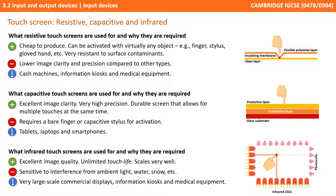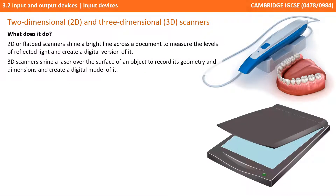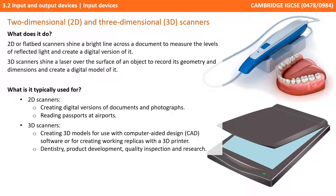Lastly, we have two-dimensional and three-dimensional scanners. A 2D or flatbed scanner shines a bright light across a document to measure levels of reflected light and creates a digital version of it. A 3D scanner shines a laser light over the surface of an object to record its geometry and dimensions to create a digital model of it. 2D scanners are used for creating digital versions of documents and photographs, and can also be used for reading passports at airport security. 3D scanners are used to create 3D models for use with computer-aided design software or for creating a working replica with a 3D printer.